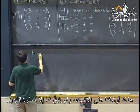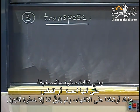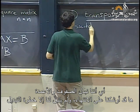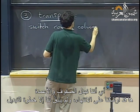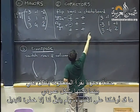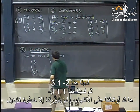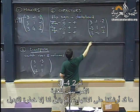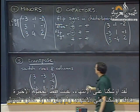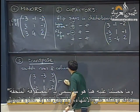Step 3: transpose the cofactor matrix — switch rows and columns. Read each row and write it as a column. This gives the adjoint matrix. For our example, reading the cofactor rows as columns produces the 3×3 adjoint matrix with entries: first column (3, 1, -2), second column (-3, 1, 1), third column (3, -4, 2).